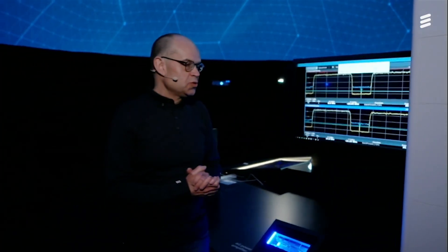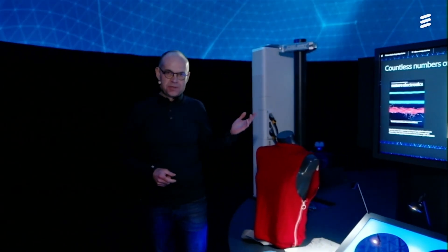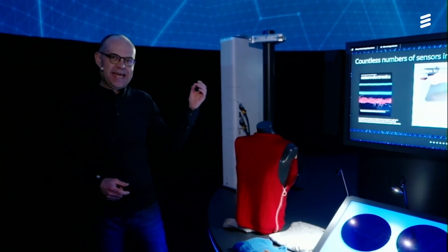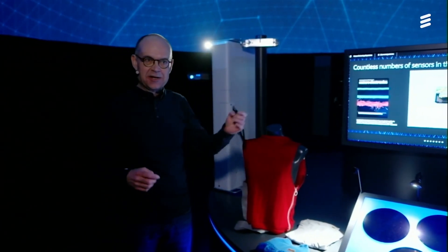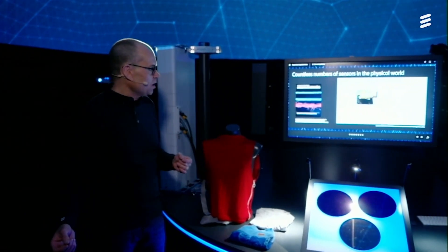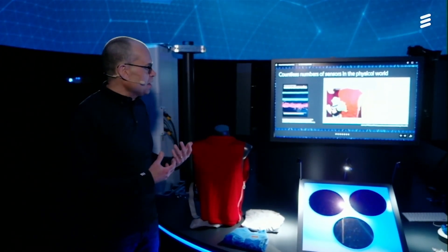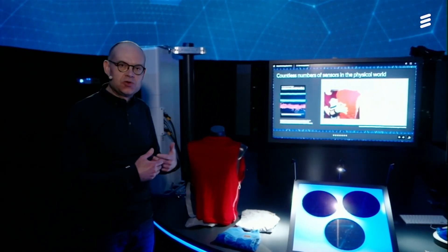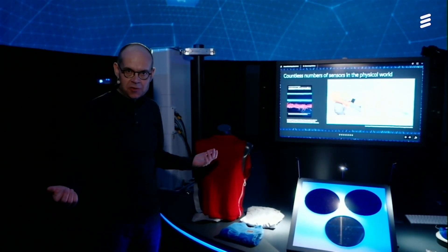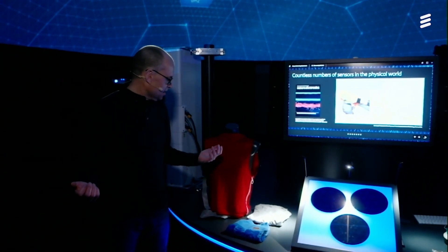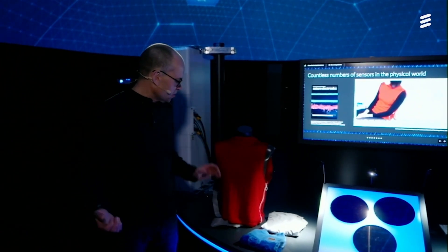So let's move on to the last example that we show here. I would say, if 100 gigabits per second is on one end of the scale, this is the other end of the scale. Here we are working on a scenario where we have trillions of sensors all around us.